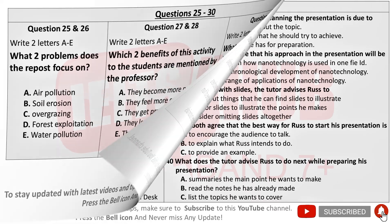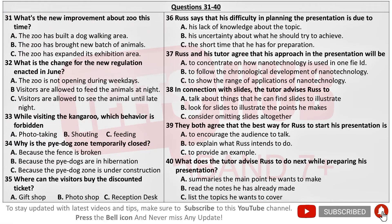Now turn to section four. Section four. You will hear part of a talk about an Australian wild zoo given by a tour guide. First, you have some time to look at questions 31 to 40.